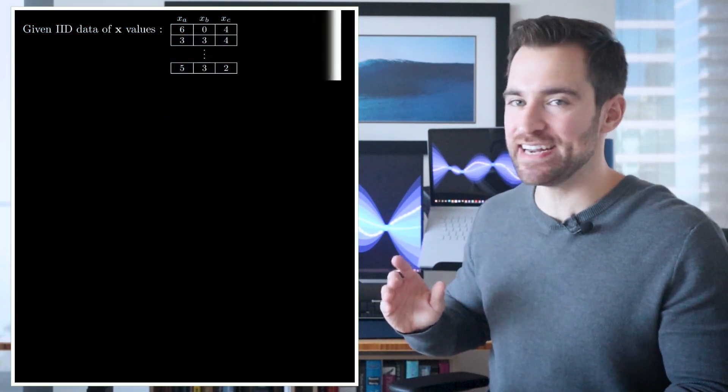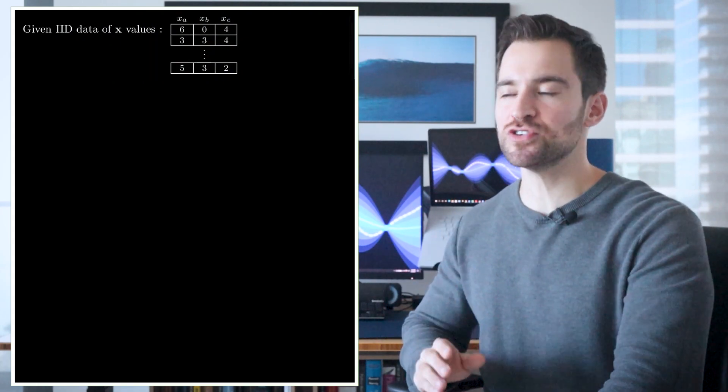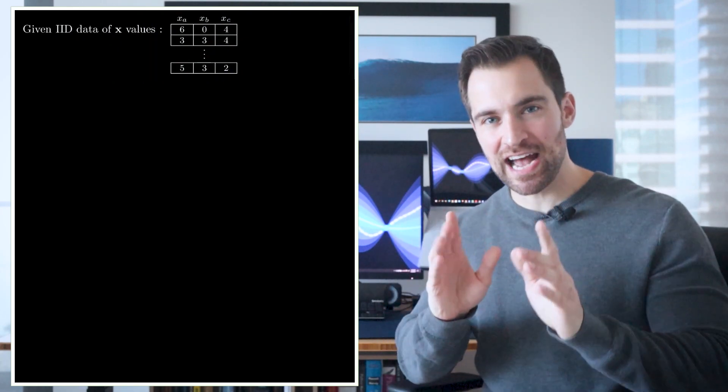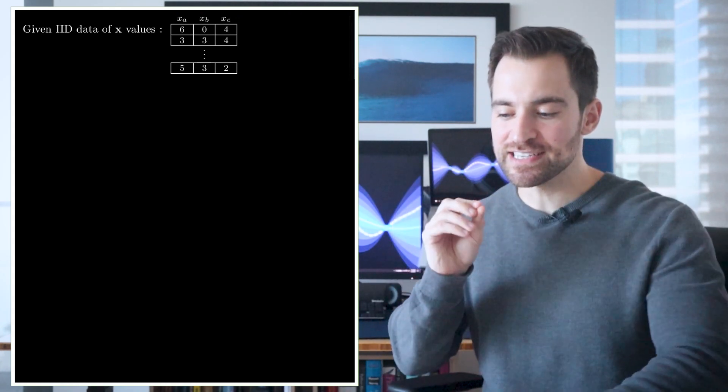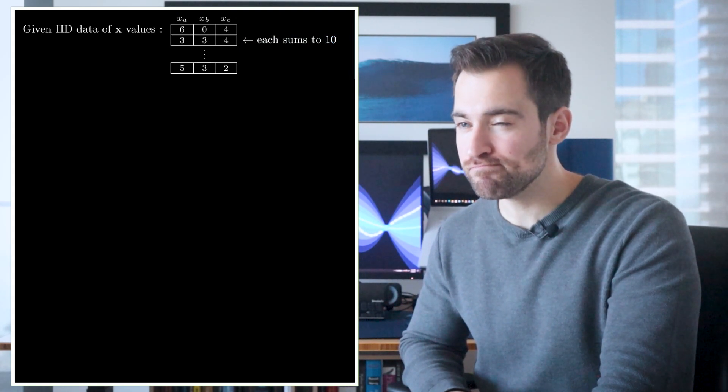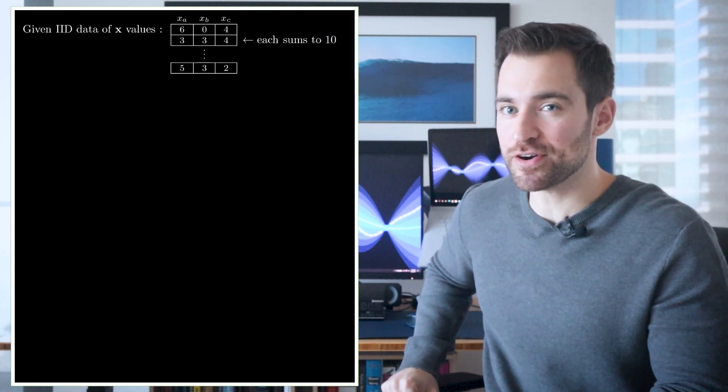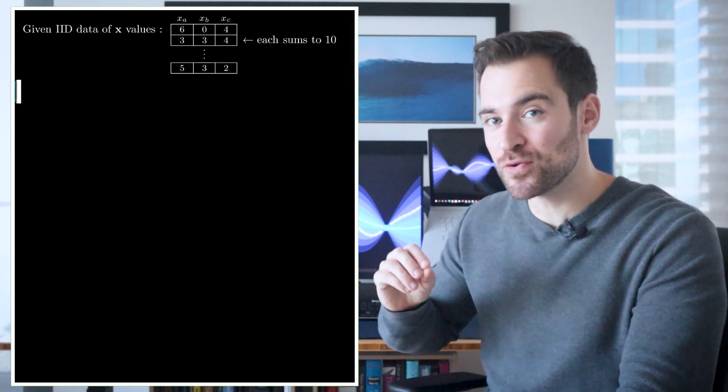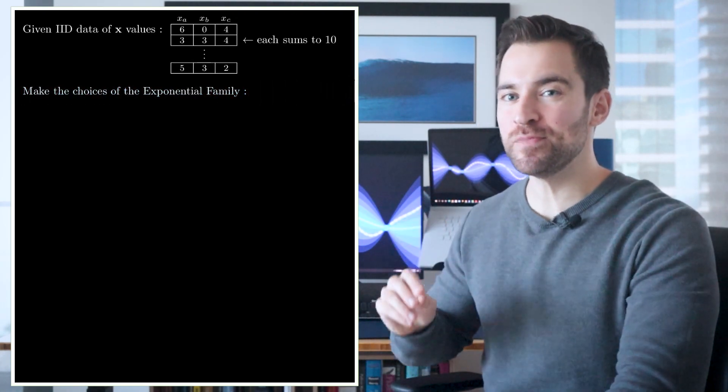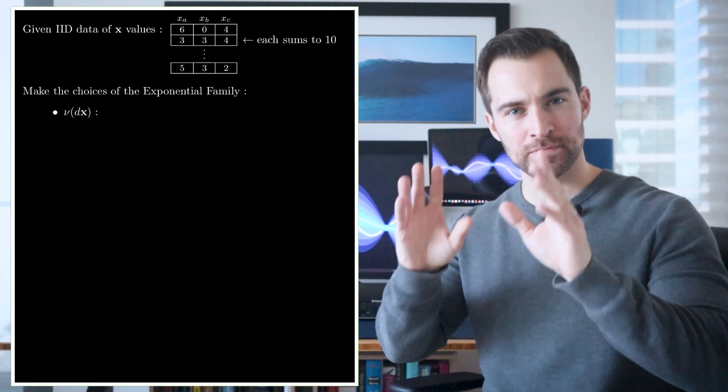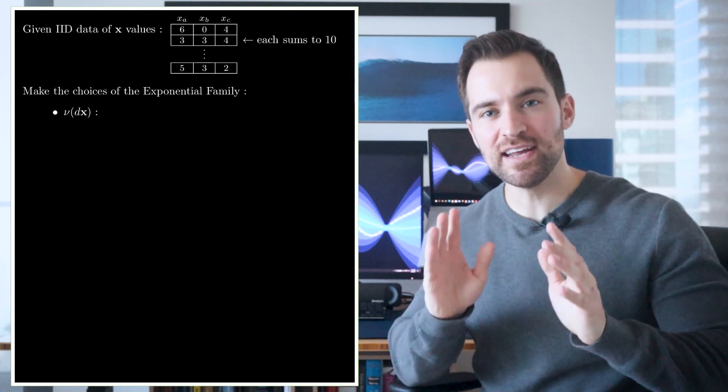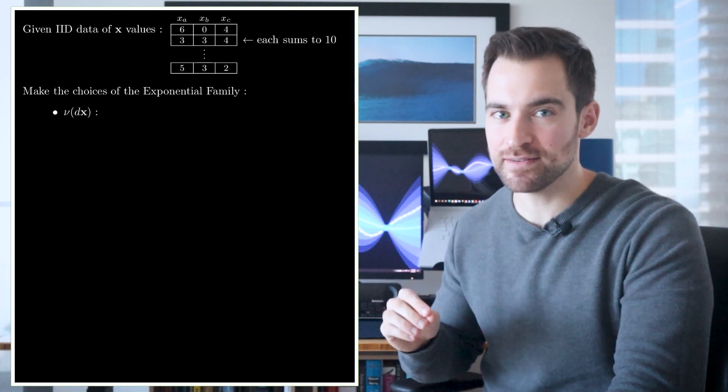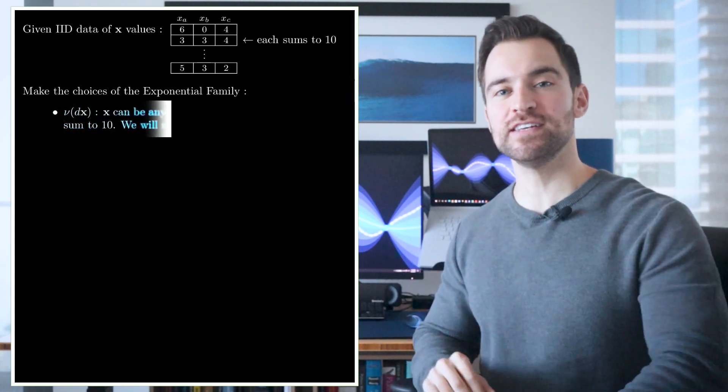But maybe it's too simple, too easy. Okay, let's push it. Let's do something harder. Let's say we came across this data. In this case, each row shows an observation of x, which is now a length 3 vector. Each number is a non-negative integer, and we see each vector sums to 10, which is a constraint. Hmm, this does indeed seem harder. Regardless, let's charge forward with our questions. Let's start by determining how we sum over all possible outcomes. Well, it seems all possible outcomes should be all vectors of length 3 with non-negative integers which sum to 10. Okay, so it's decided. We'll sum over this set.